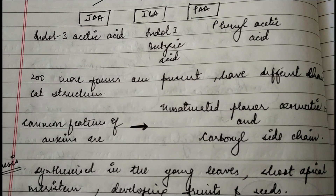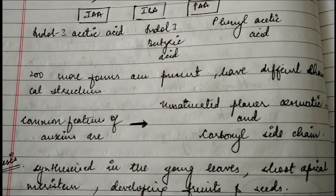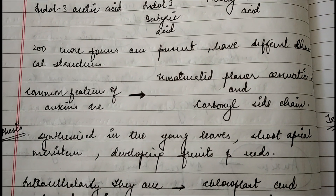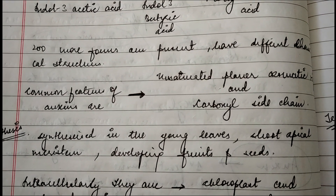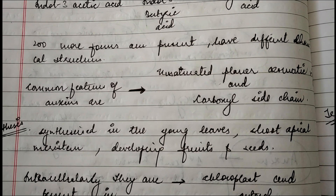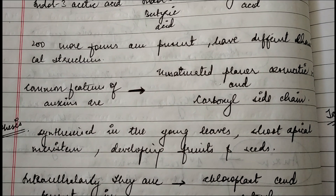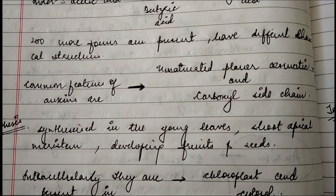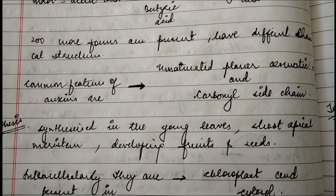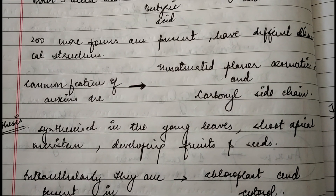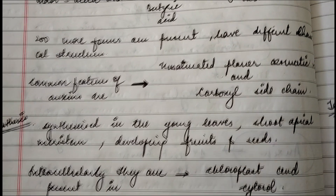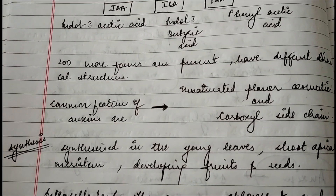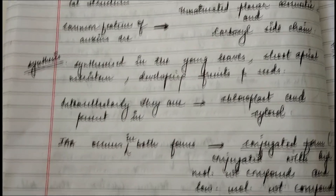Most auxin forms have different structures, but some common features of auxin are that they are unsaturated, have a planar aromatic ring, and carboxyl side chains. You can look up the structures in any book or on the internet. These common features are important to understand.